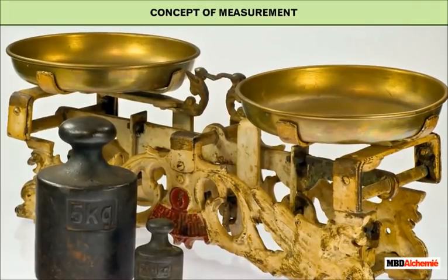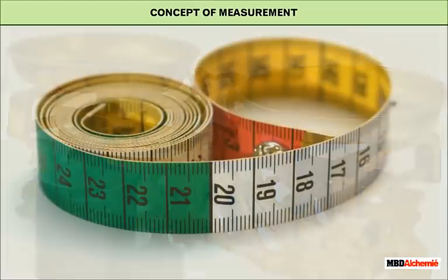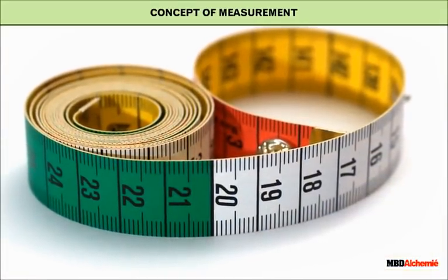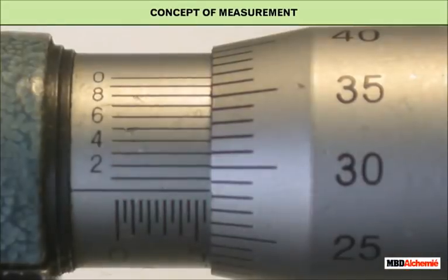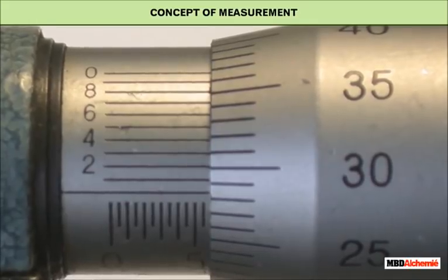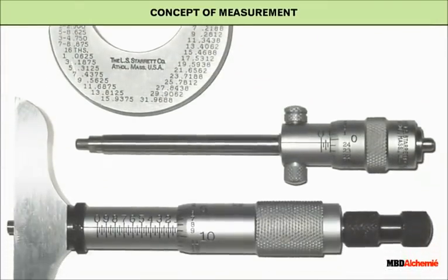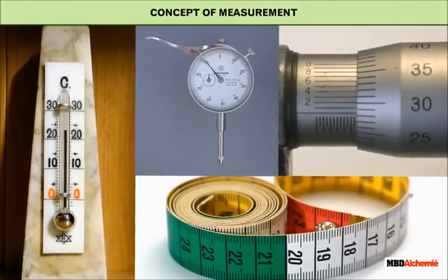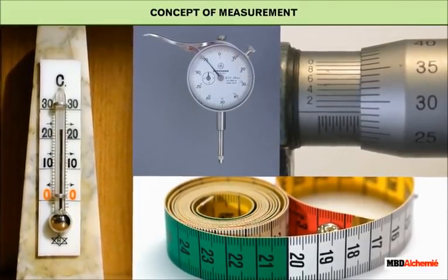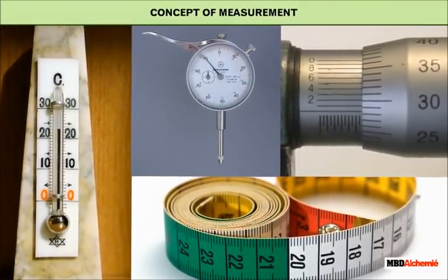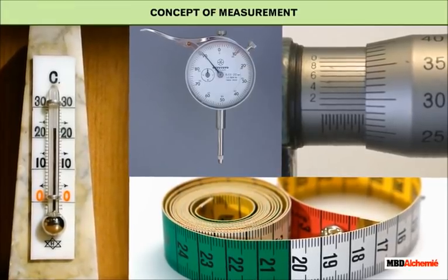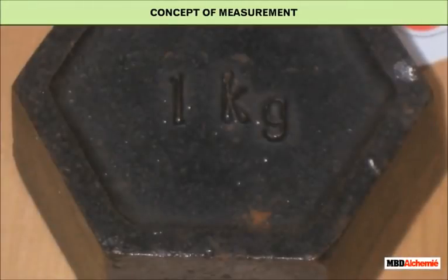Exact measurements and not rough estimations are necessary to get the results we want, and hence there is a need for accurate measurements. Measurement is a process by which an unknown quantity is compared with a standard quantity of the same kind. Measurement has two parts: the first is the magnitude and the second is the unit.